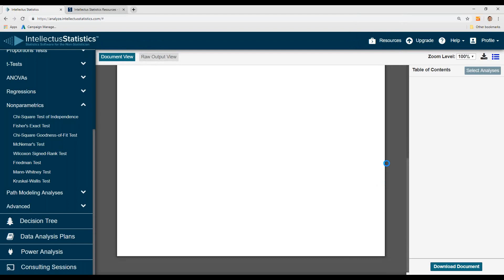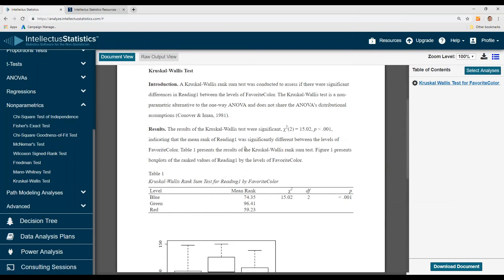Hit Calculate. Here we can see the results of the Kruskal-Wallis was significant, indicating that there was a mean rank difference in Reading 1 by the different levels of favorite color.